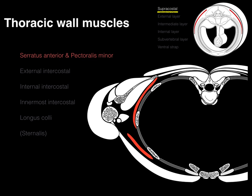Supracostal means above the ribs. In addition, the rhomboids and levator scapulae are in this same area. You can see the rhomboids in this picture, but not the levator scapulae because it's more above. But all these muscles are in that supracostal plane.